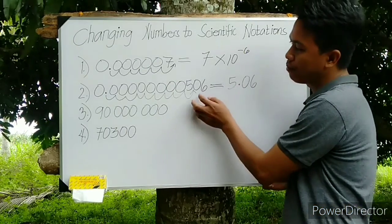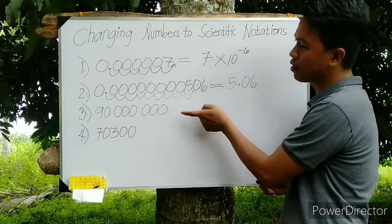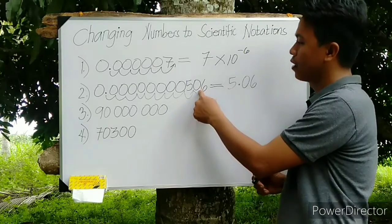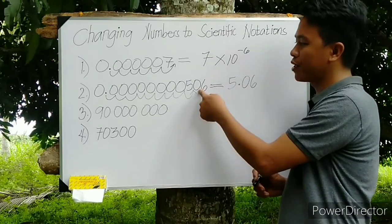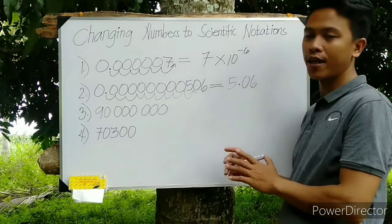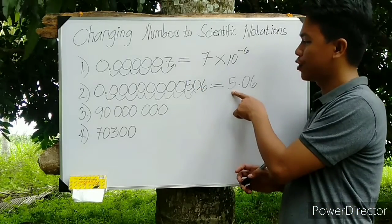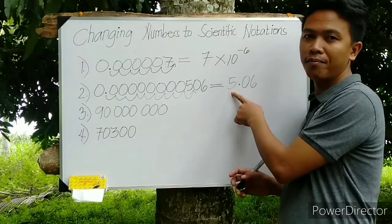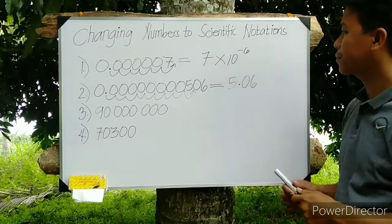It cannot end between 0 and 6, because if the point is here, the value of A is equal to 50.6, which is not allowed. Because as I have said, the value of A should be more than 1 but less than 10.